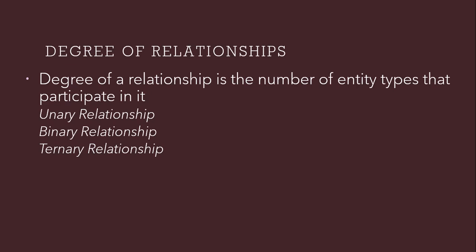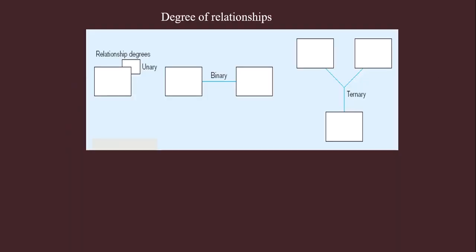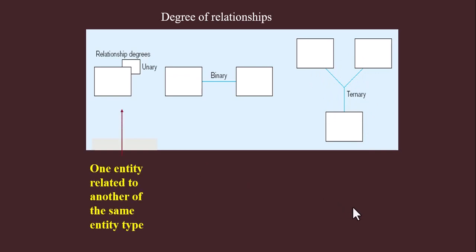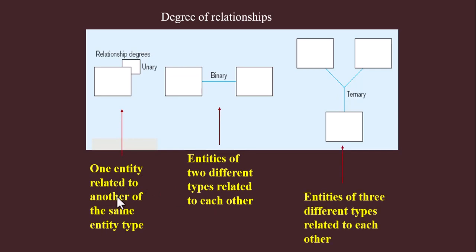We have three major relationship types. In a unary relationship, an entity has a relationship with itself. In a binary relationship, the relationship always exists between two entities. And a ternary relationship exists among three entities. One entity is related to another of the same entity type; entities of two different types are related to each other; and in ternary, entities of three different types are related to each other.